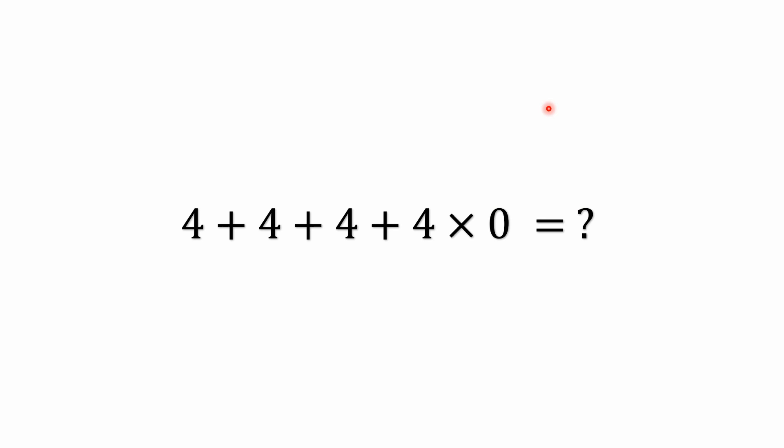Hello everyone and welcome back to the Math Puzzle Crash Course. We have a simple mixed operations problem, mixing addition with multiplication, similar to a lot of the other problems we've done before. This one has shown up in some Facebook forums and a lot of people get the correct answer, but there's still some confusion on the way that this works. So I'd like to work through this. You can pause the video and try to work it out, and then we will come back together and solve it.